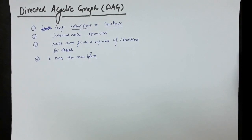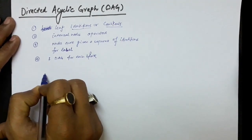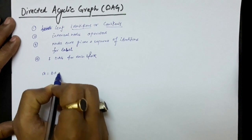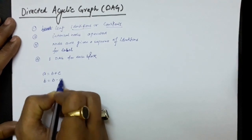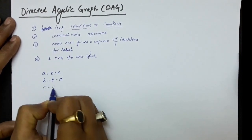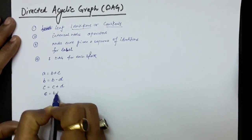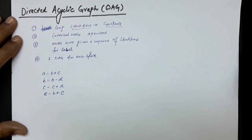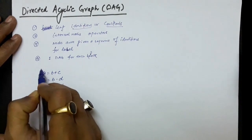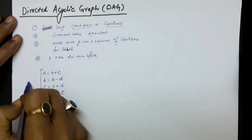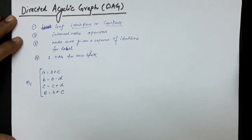Let us take a simple example to understand this. Suppose we have a basic block: A equals B plus C, then B equals B minus D, then C equals C plus D, then E equals B plus C. We have to form the directed acyclic graph for these statements. This is representing one basic block, named B1, having four statements.